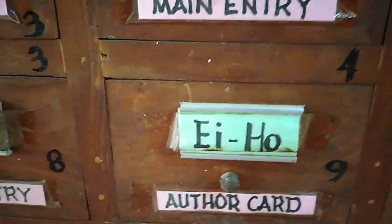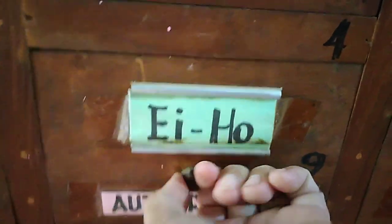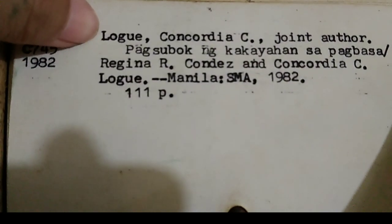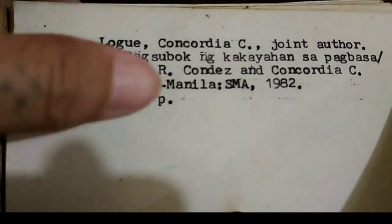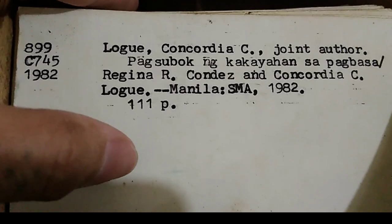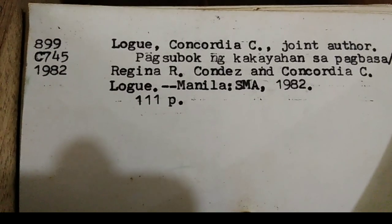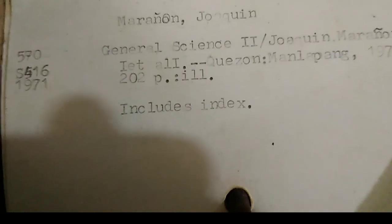The author card is one type of the added entry. For the author card — this is already antique — we'll try to find one which is clearer. Call number again. The name of the author is written above, and then the title of the book. As you might notice, there is no tracing in here. Why? As I stated earlier, we can only find a tracing if the card or entry is a main entry. What we are opening now is an added entry — specifically, an author card. No tracing for the added entries. Author card means the information that you can read right away at the top of the card is the name of the author.